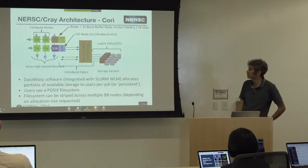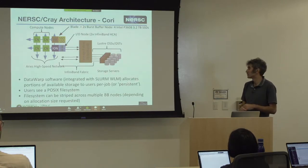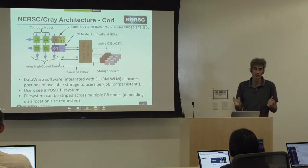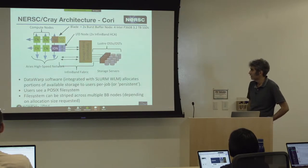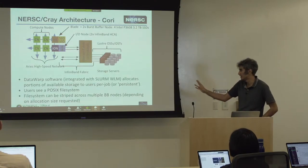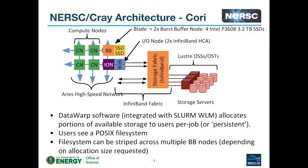There's also DataWarp software provided by Cray that goes with this, integrated with the workload manager, so you can request pools of storage on the system in quite a flexible way — either to use just within your job or to be persistent across different jobs. There's nothing magic about the burst buffer; you do just see a file system at the end of it. This file system can be striped across many nodes or just one node, allowing more flexibility than a single local disk.